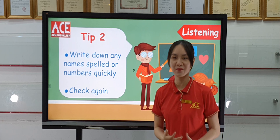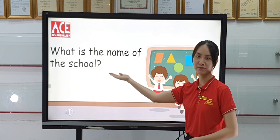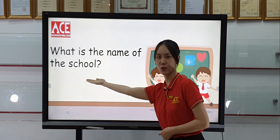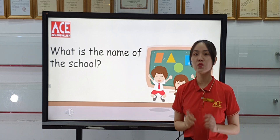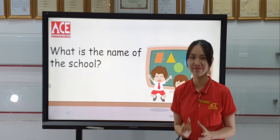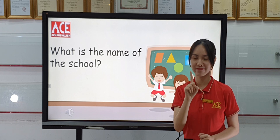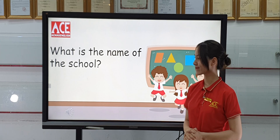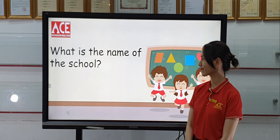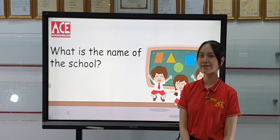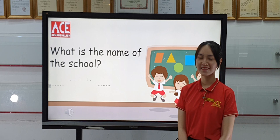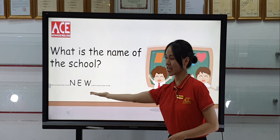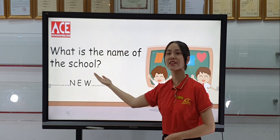Now let's move on to an example. The question is: 'What's the name of your school?' Focus on the two keywords: name and school. In this part, you must not write a whole sentence — one word only. Let's listen to the recording. 'What's the name of your school?' 'It's New School.' 'Is that N-E-W?' 'Yes.' The answer is N-E-W, New School.